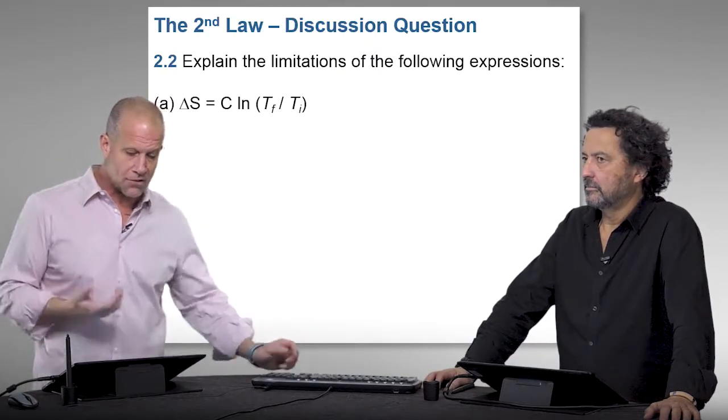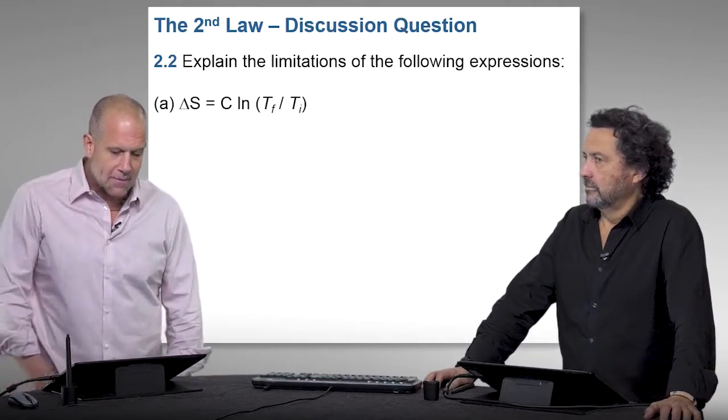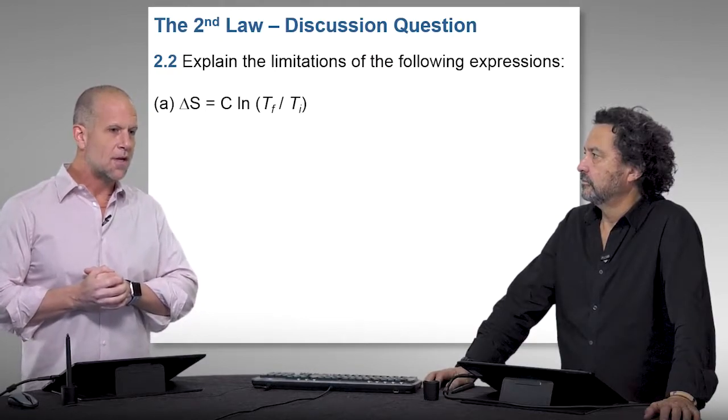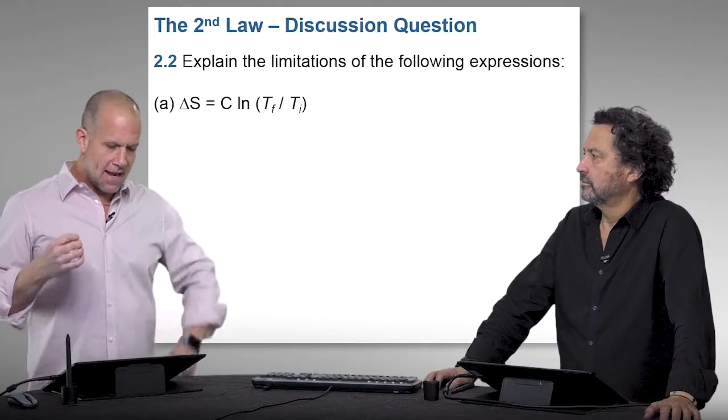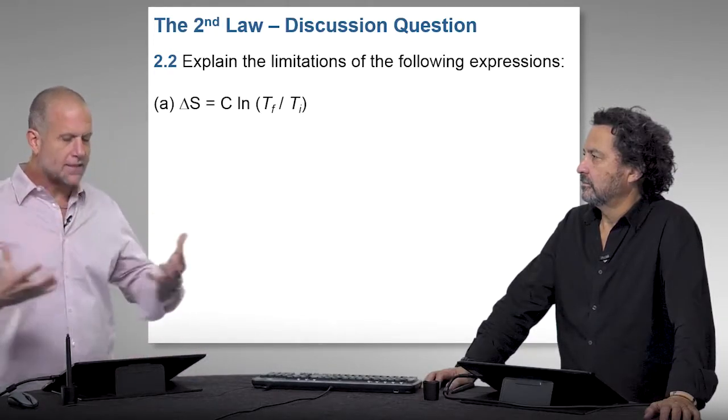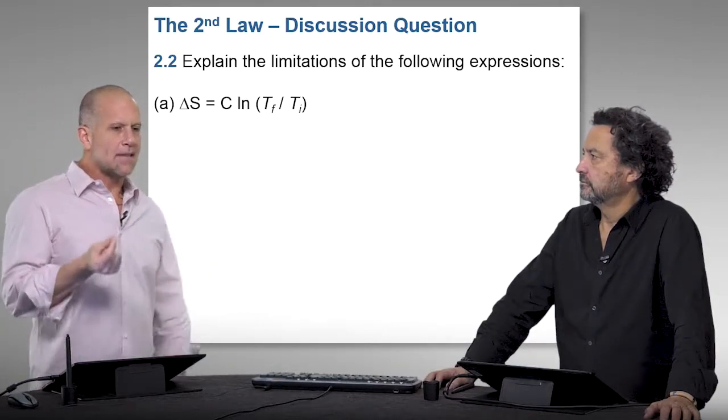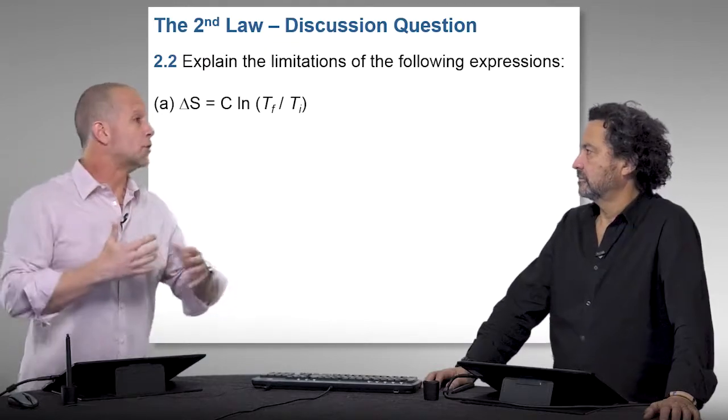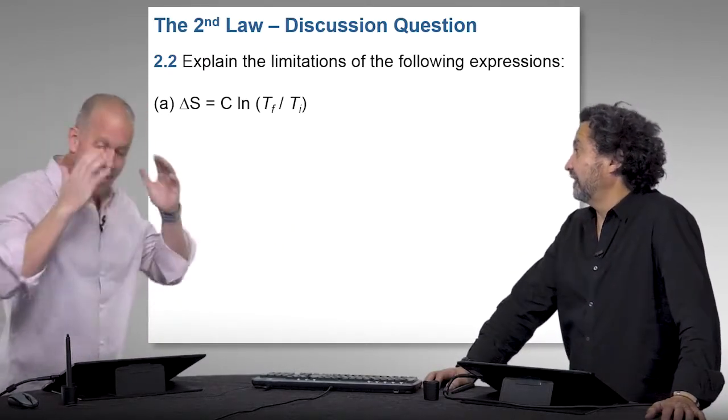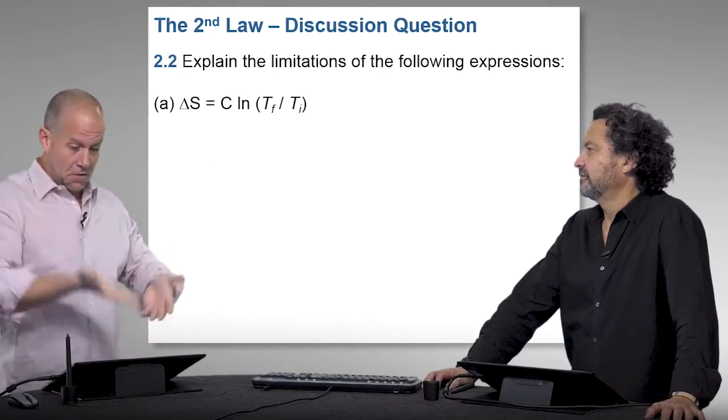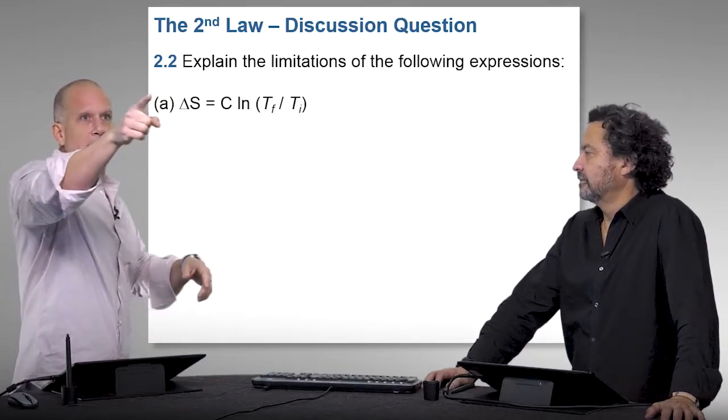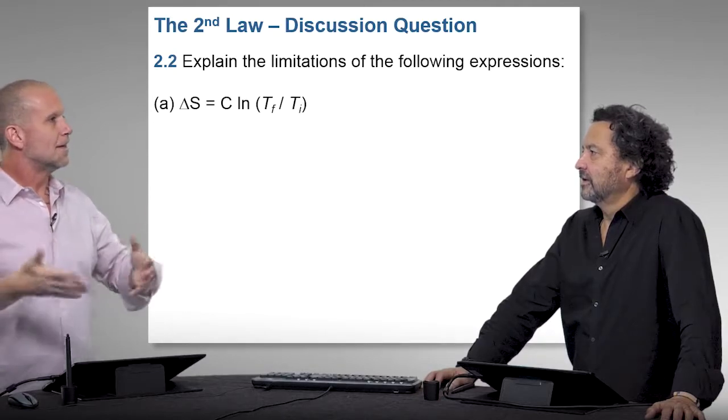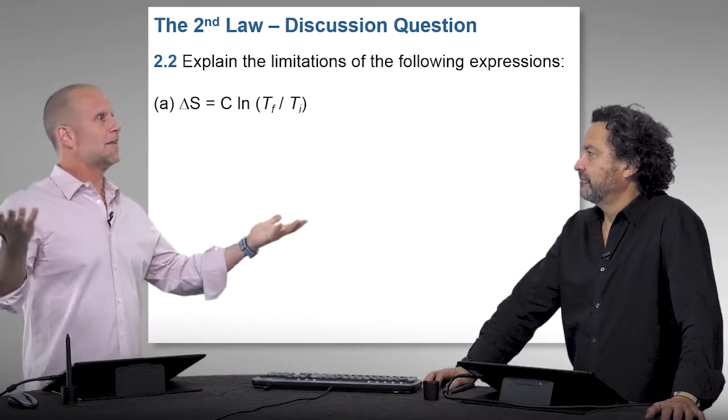This question is explicitly stated as explain the limitations of the following expressions, and he gives three separate expressions. One of the main problems students have in physical chemistry is which equation do I use to solve a problem, which is the wrong question to ask. I see at the end of the chapter all the relevant equations, and there's like 10 equations for entropy. Which one do I use and why are there 10 different equations for entropy?